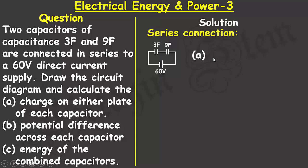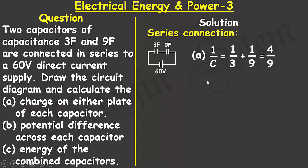To solve part (a), I'll first find the effective capacitance of the two capacitors connected in series. The formula is: 1/C = 1/3 + 1/9, where 3 and 9 are the capacitances of the first and second capacitors respectively. Solving the right-hand side gives 4/9.